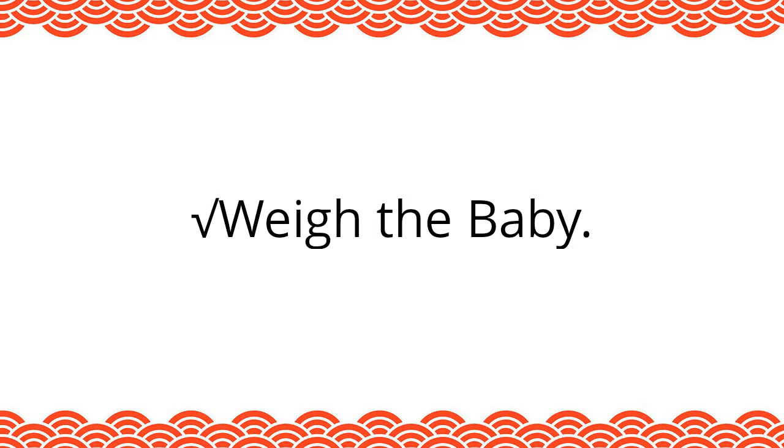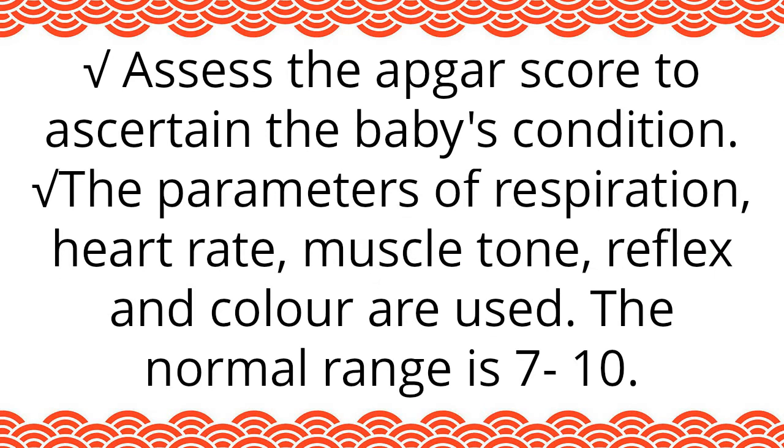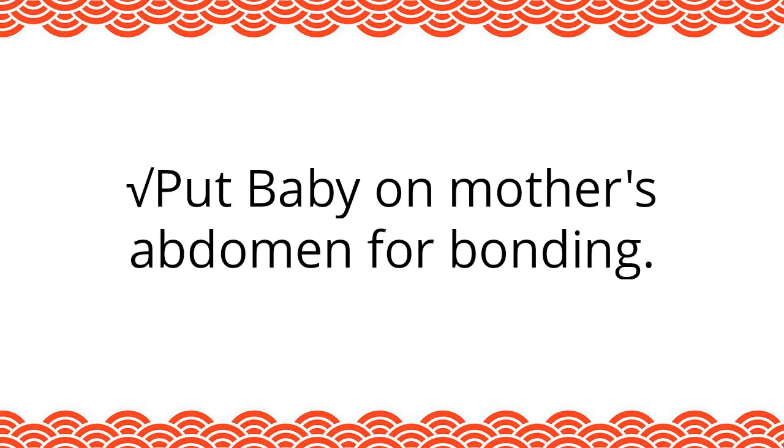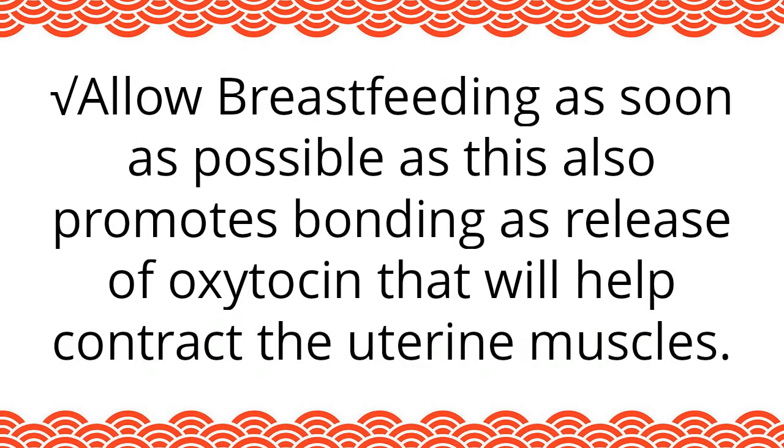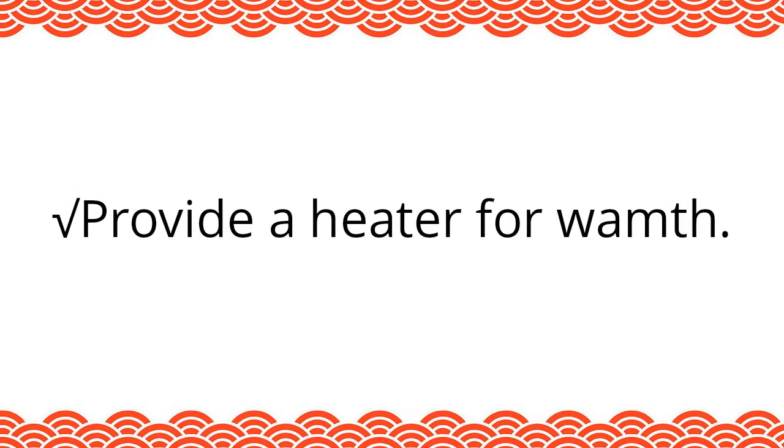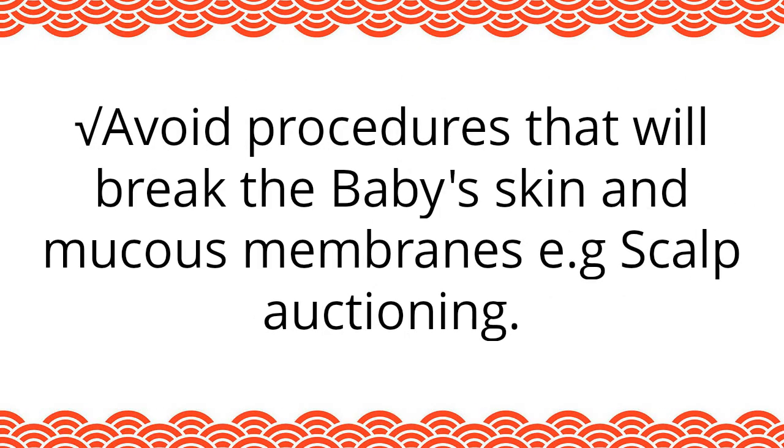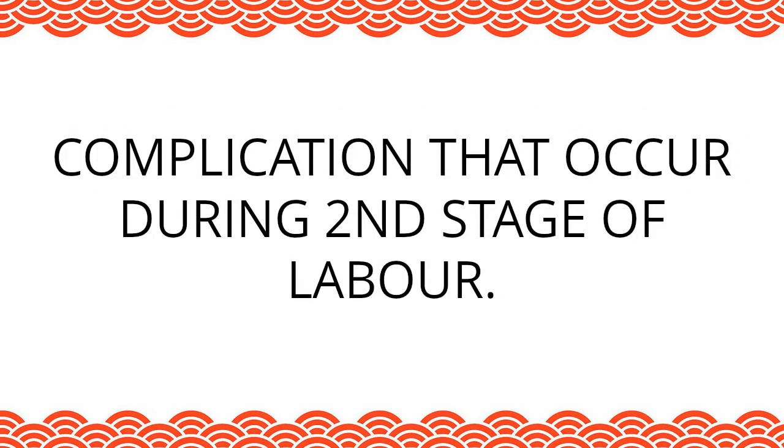Immediate care of the newborn. Dry the baby. Clamp the cord by applying two artery forceps about three centimeters apart, hold a swab over the cord, and cut the umbilical cord. Note the time of birth. Show the baby to the mother for identification. Administer oxytocin 10 units within one minute after childbirth to stimulate uterine contractions. Put an identification band on the baby's wrist containing name, sex, file number, date, and time of birth, and APGAR score. Cover the baby in a towel and weigh the baby.